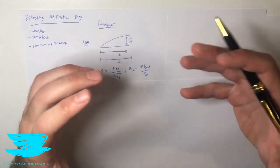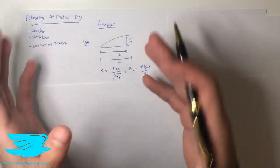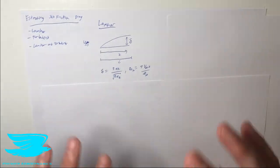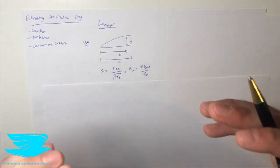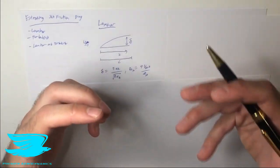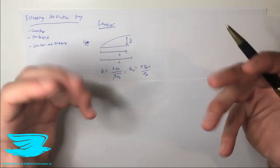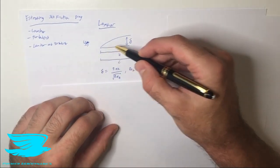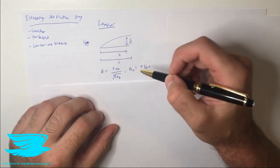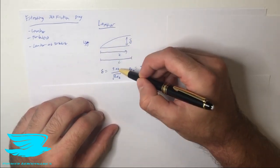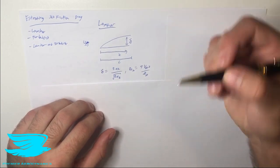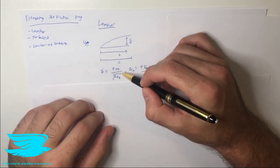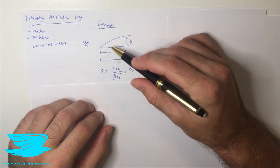The Blasius boundary layer is a quintessential boundary layer we always talk about when we have flow going over a flat plate with no pressure gradient. If you don't understand what that means, just think of it as a typical boundary layer used for theory. The boundary layer thickness at any point along the plate is given by: delta equals 5x divided by the square root of the Reynolds number based on that distance x.